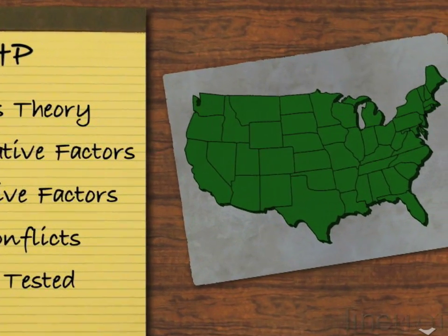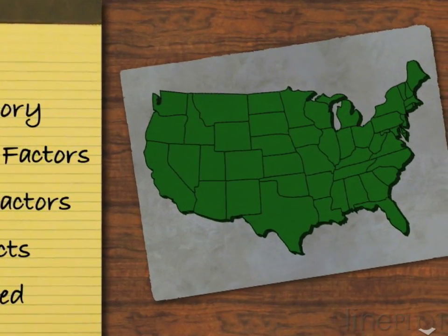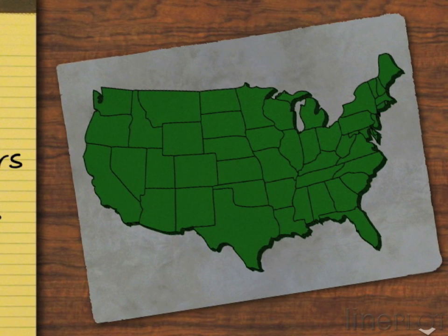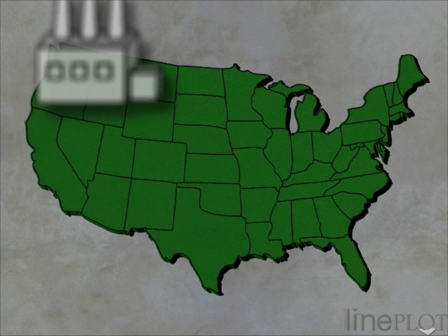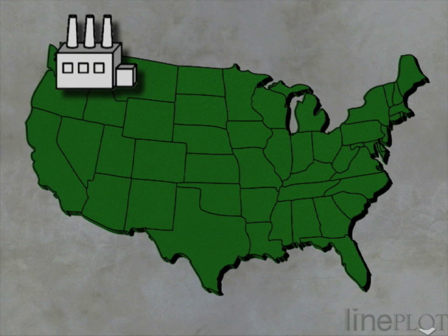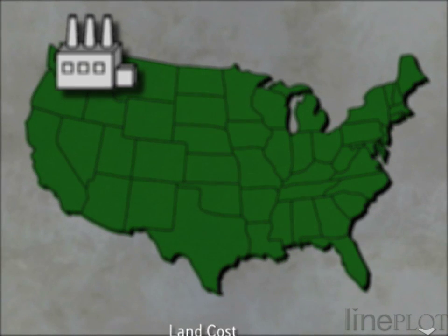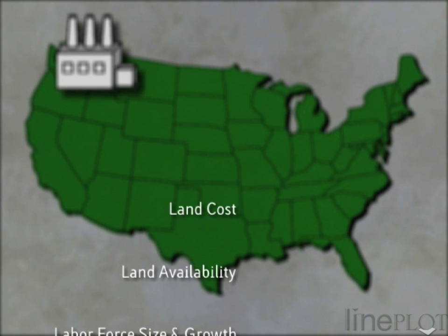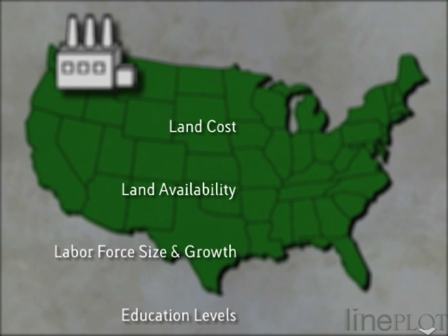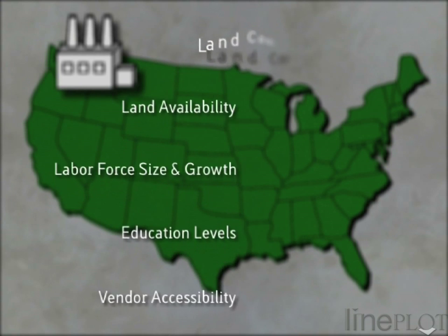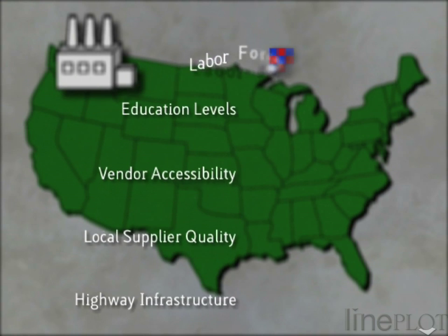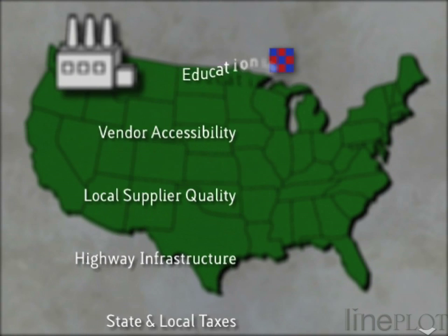To better understand AHP, we will first look at how the algorithm is used in a classic industrial problem: finding the best location for a new auto manufacturing plant. Such a plant costs billions of dollars and cannot be moved. There are a host of considerations — land cost, labour force, supply chain, taxes, political environment, and the list goes on.